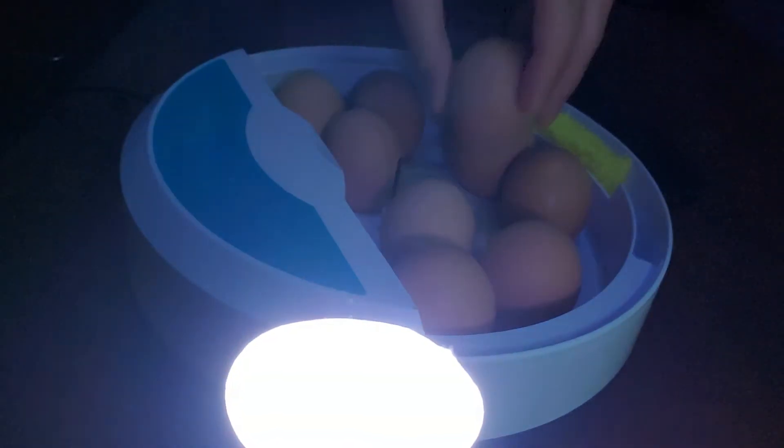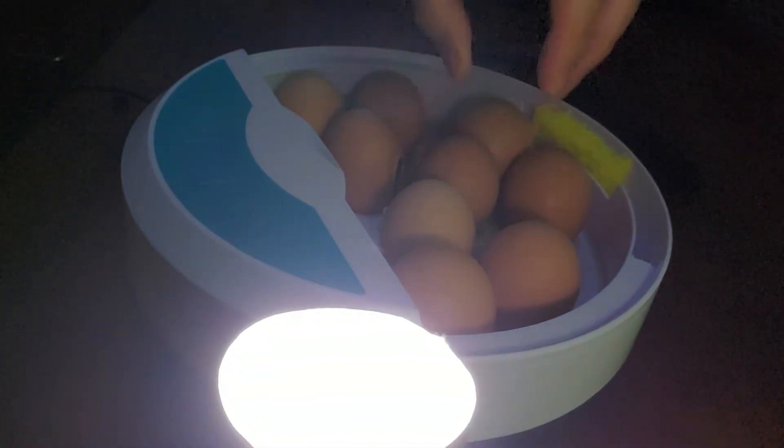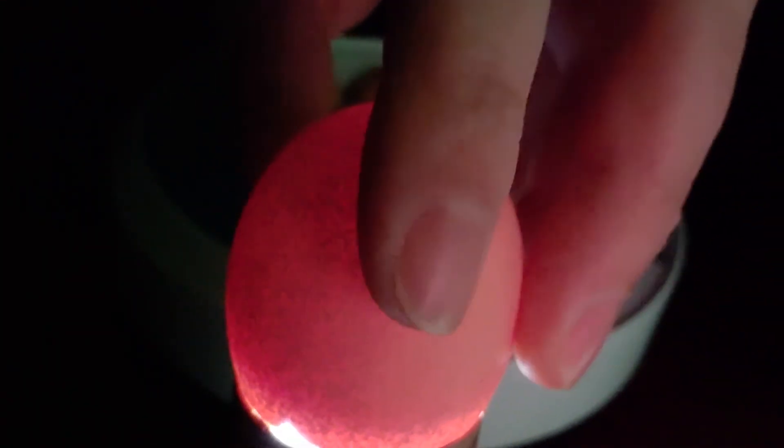Again if these were white eggs you'd be able to see all those blood vessels developing in there. You would be able to better identify the embryo inside. I can from my point of view see a very dark spot. See I don't know if you can see that, see right there that's the embryo.